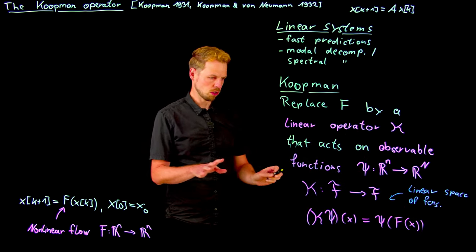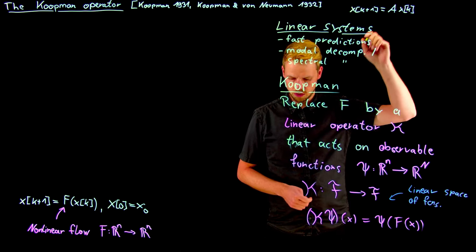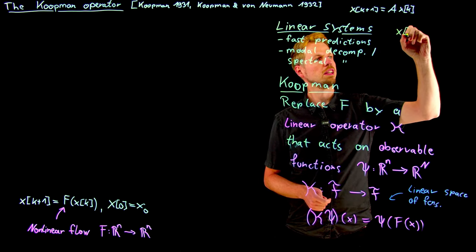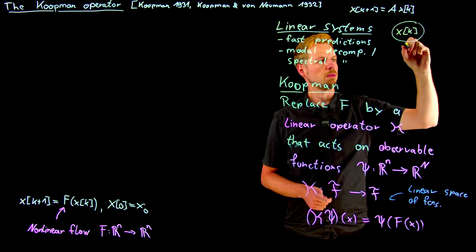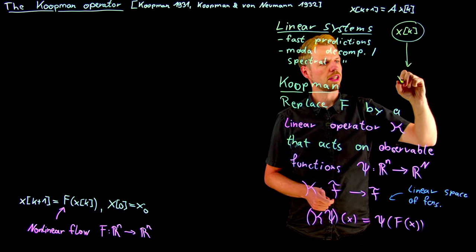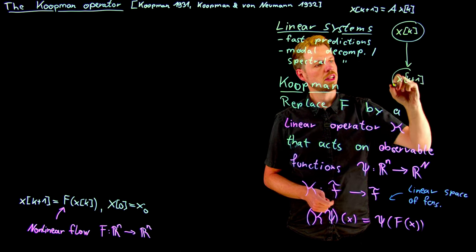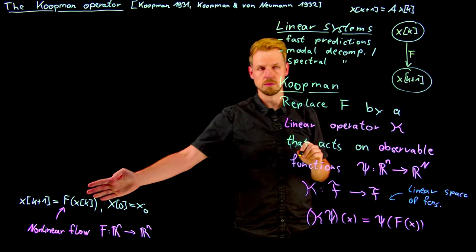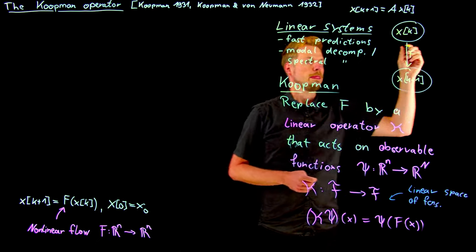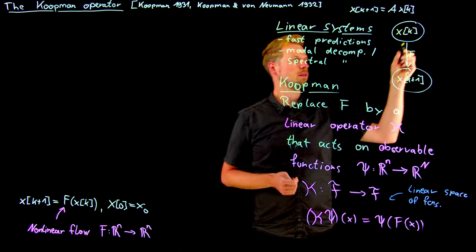So this can be drawn in a simple diagram. What you can see is, let's say we have our state x_k here, and we map it forward in time to state x_{k+1}. And this is usually done using this nonlinear flow.